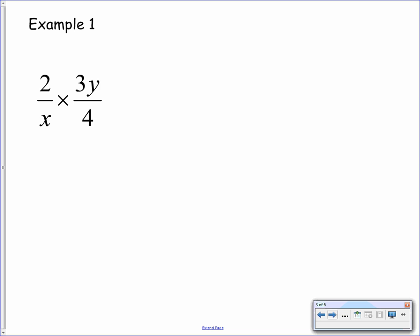So here is example number one. We have 2 over x multiplied by 3y over 4. We simply have to multiply the numerators together and multiply the denominators. However, before we do the multiplication, we should look to simplify it first. For simplification, we always look diagonally. So you'll see that we have a 2 here and a 4 here. Both of these will divide by 2. So if we divide both of these by 2, we end up with a 1 and a 2.